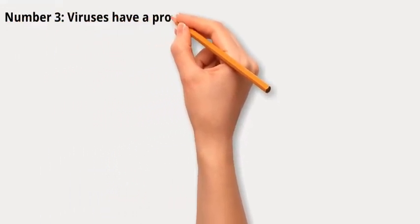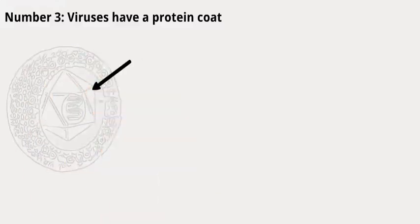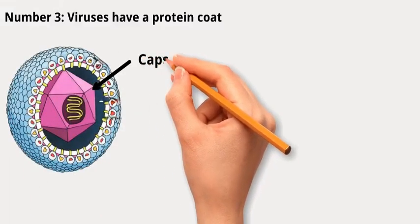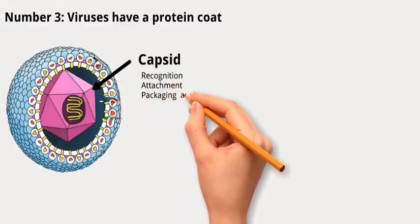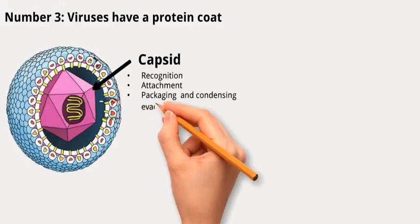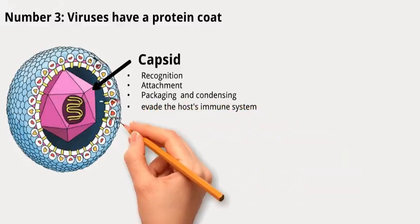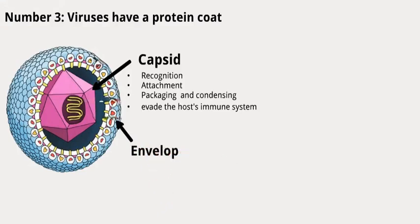Number three: viruses have a protein coat. The protein coat, known as a capsid, surrounds and protects the viral genetic material. It plays a critical role in recognition and attachment to the host cell, and helps in packaging and condensing the viral genetic material into a compact and stable form. In some cases, viruses may modify their capsid proteins to evade the host's immune system.